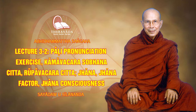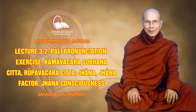And when a Buddha smiles, hasitupada arises. Why are these called ahetuka or rootless? Because they have no concomitant roots - they arise without roots. What are the roots? Three unwholesome roots and three beautiful roots. The unwholesome roots are greed, hatred, and delusion. The beautiful roots are non-greed, non-hatred, and non-delusion. These six are called roots.